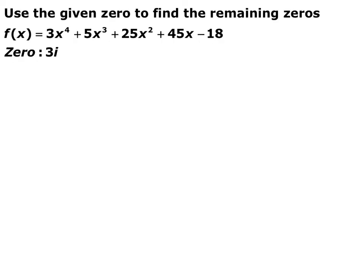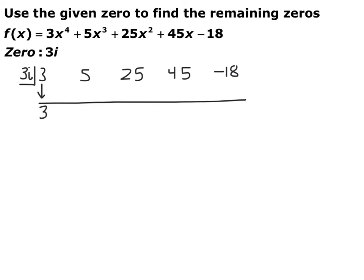This next example is similar but a bit easier, because the root is just 3i — not an a plus bi form. So you can use synthetic division directly, the same way you would if the zero were 3. You set up your synthetic division, put 3i in the box, pull down the leading coefficient, and proceed exactly as you would with a real number.